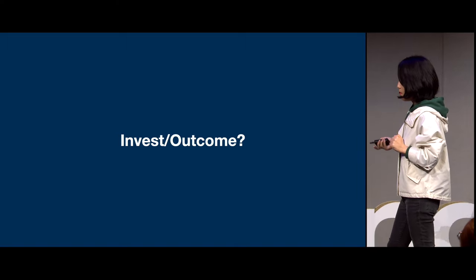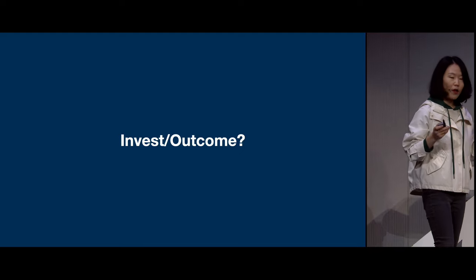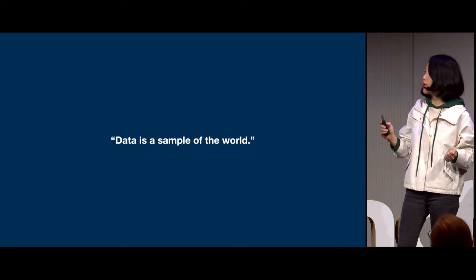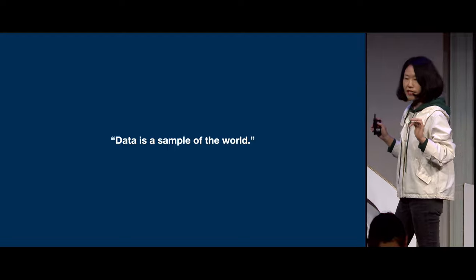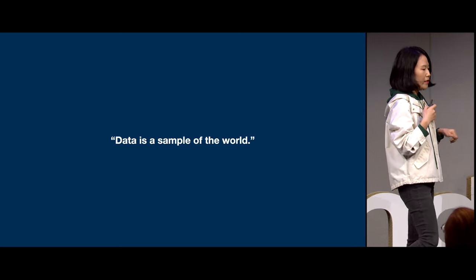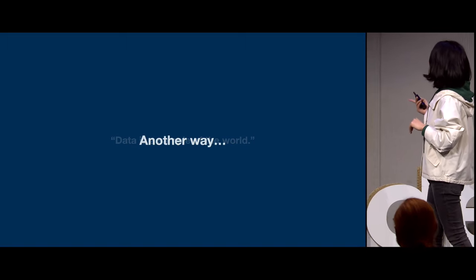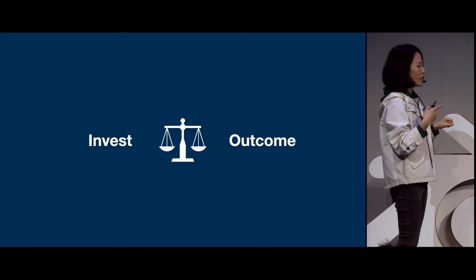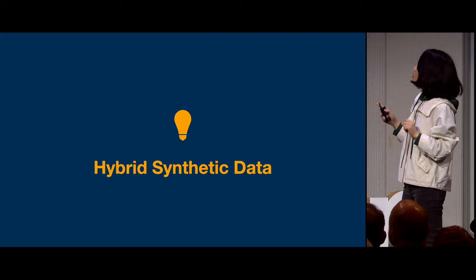But here is a big problem with synthetic data generation: the index of investment and outcome is very unclear. Data is a kind of world we want our AI to learn. As we're training for real scenarios, it's intuitive to think we want the data to be as real as real data. As a 3D artist, you know what that means — very complex procedural content generation, high-quality assets, and a lot of rendering. But we found another way to do this synthetic data generation where we can invest less, measure the outcome very quickly, and it works very well. This is hybrid synthetic data.